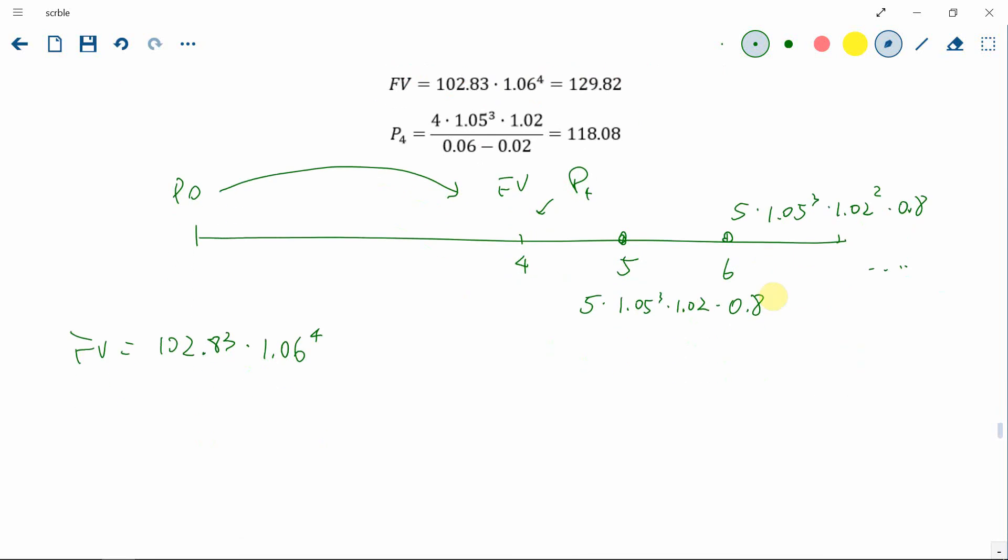So again, we use that perpetuity formula. So I'll draw the diagram again. This is X. This is X. This is X times one plus G. This is X times one plus G squared.